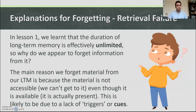In lesson one we learned that the duration of long-term memory is effectively unlimited, so why do we appear to forget information from it? The main reason we forget material from our long-term memory is because the material is not accessible — we can't get to it even though it is available and actually present. This is likely to be due to a lack of triggers or cues.